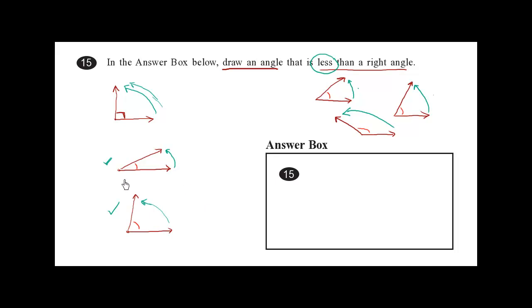So let's just draw our first one in our answer box. This one like this. This one like this. And I will just complete it by drawing the symbols in there. And that is your answer. This figure that we've drawn is an angle that is less than a right angle.